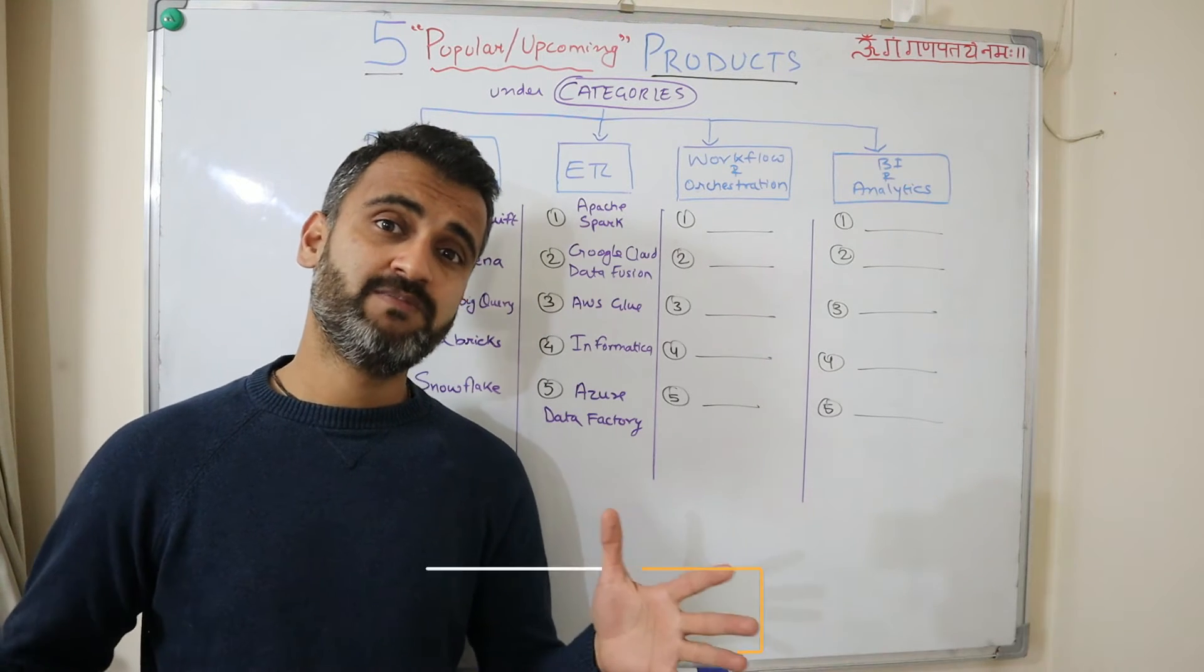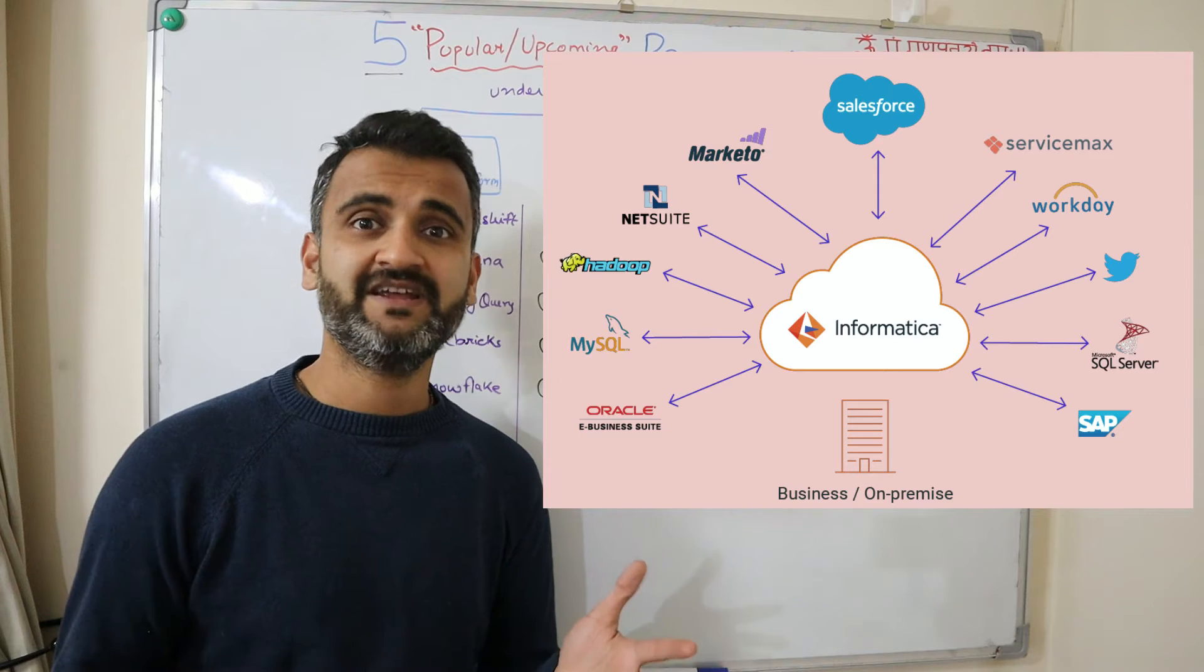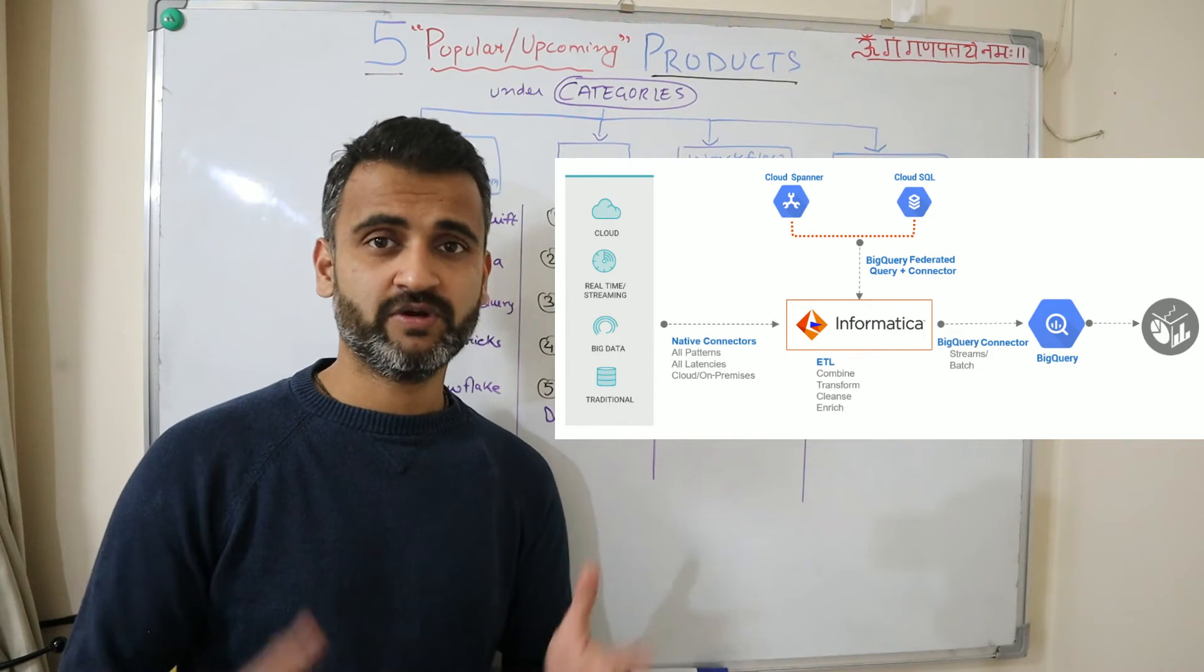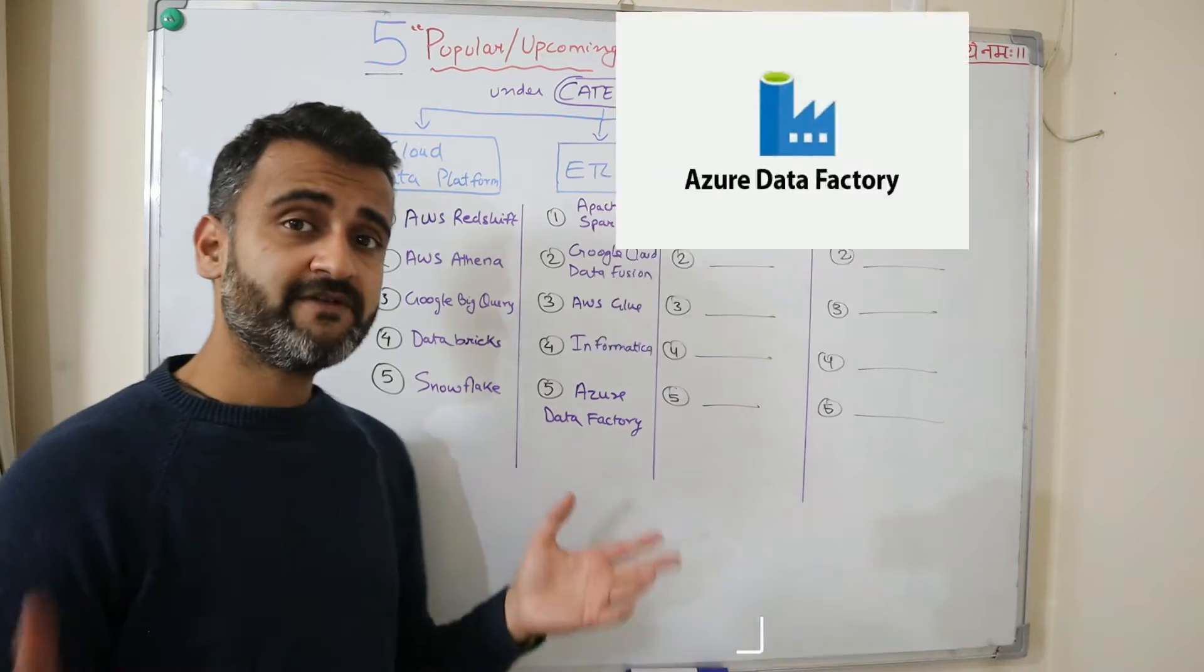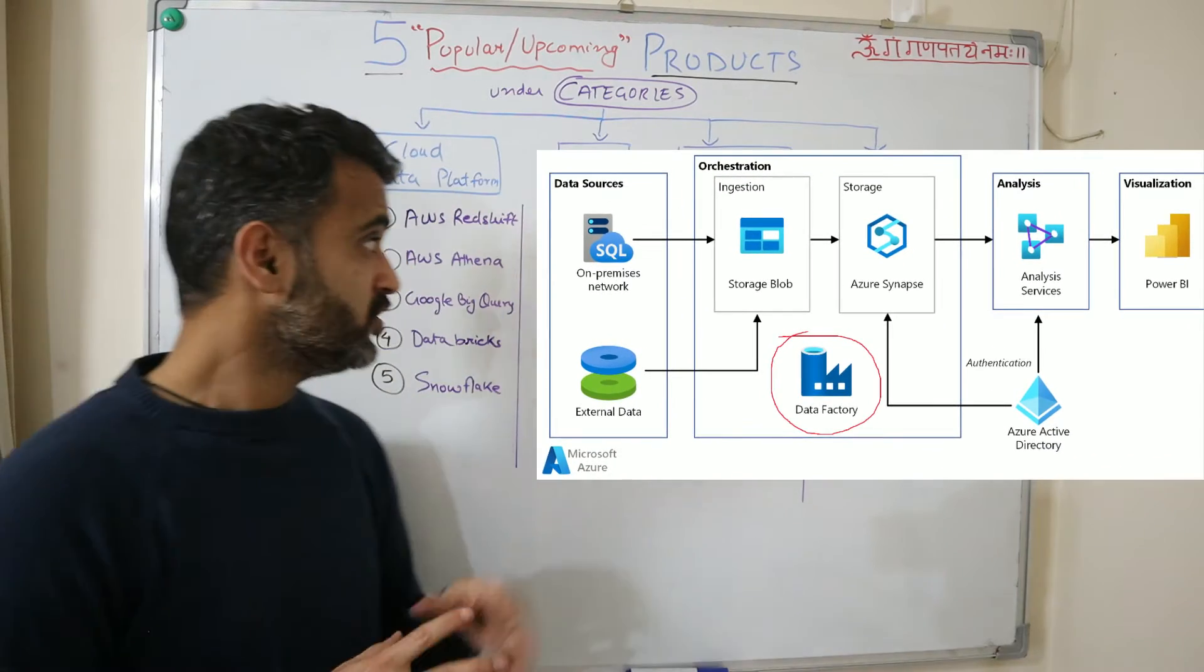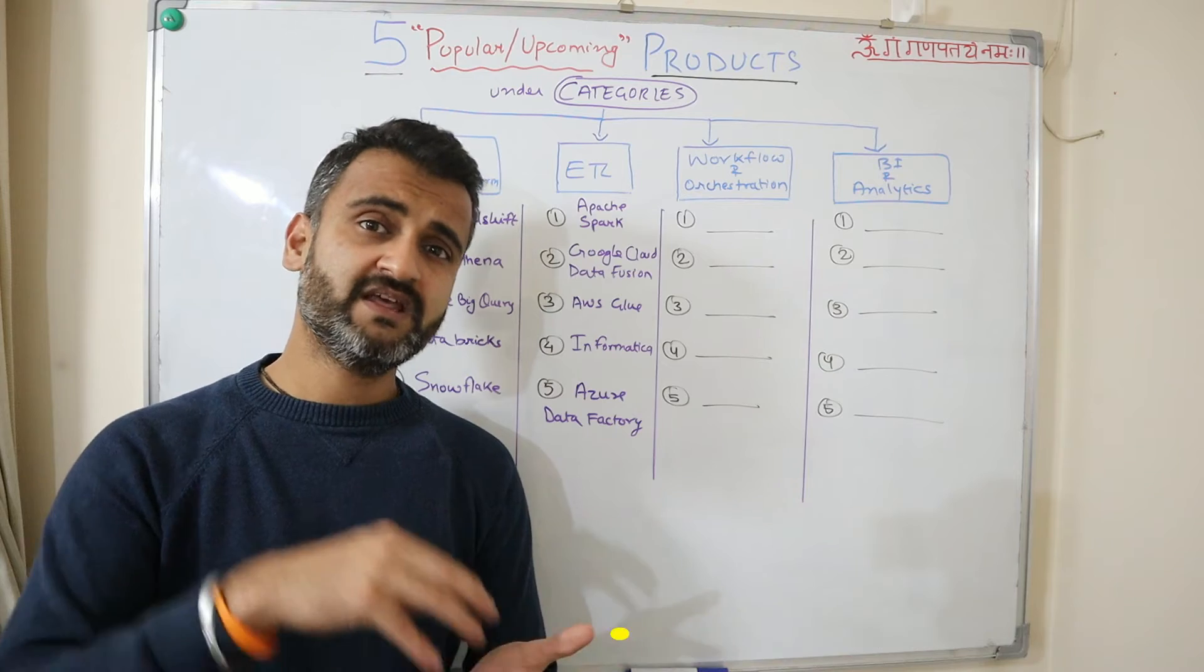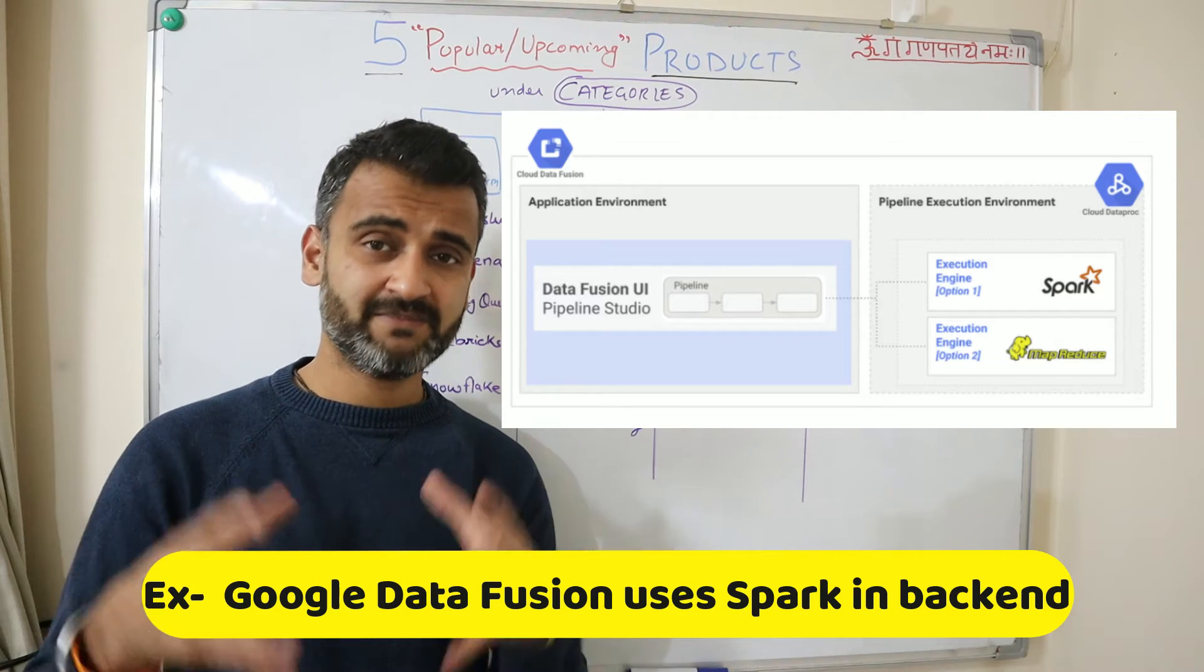AWS Glue is again very similar, a UI based cloud native solution. Informatica has been a very big player right from the old age when everything was on-prem. Informatica was one of the prominent ETL products, and now Informatica has moved to the cloud with integration with players like Google. Google Cloud and Informatica have collaborated and you can use Informatica on Google Cloud. Informatica is again a very good product. Azure Data Factory also gives you a UI based product where you can create your ETL design.